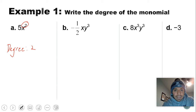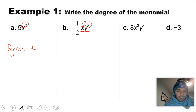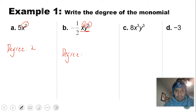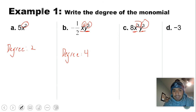In this example, I have two different variables, x and y. The x has an exponent of one. So I add up my exponents — one on the x and three on the y — so my degree in letter B is going to be four. Once again in letter C, I have two variables, x and y. Adding my exponents, three plus three, so my degree here is going to be six.